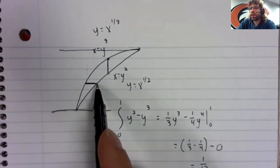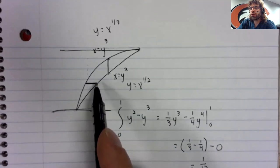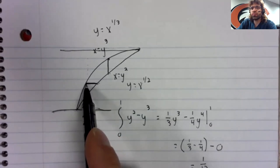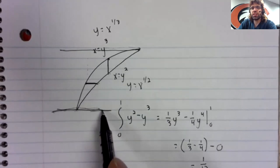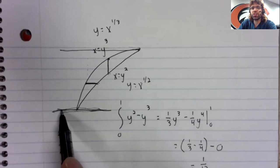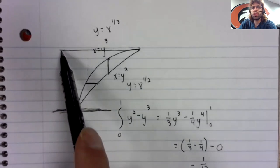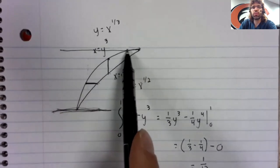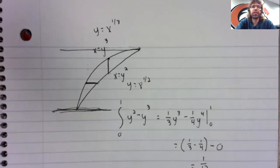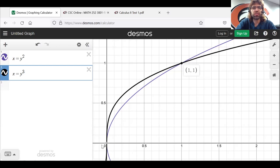y squared is the right curve, y cubed is the left curve. So our boundary goes from y equals zero to y equals one. If you're struggling with that at all, you can, as far as I'm concerned, just use Desmos.